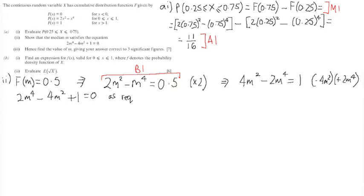Finally, let's have a look at part 3. Part 3 wants us to find the value of M given the answer correct to three significant figures. Now actually, what we have here, 2M to the power of 4 minus 4M squared plus 1 equals 0, this is a quadratic in M squared, so you could consider this as 2M squared squared minus 4 lots of M squared plus 1 equal to 0. Now that means that we can factorize or try and factorize this quadratic in M squared to get a solution for M.